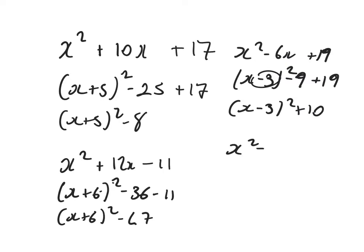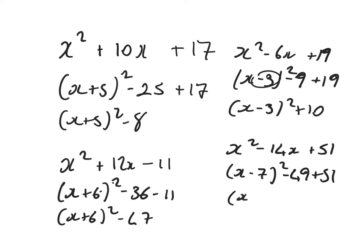Final simple example: x squared minus 14x plus 51. Half the minus 14 down to minus 7. Minus 7 squared is 49, get rid of that and I still need to add on 51. Final answer would be x minus 7 all squared plus 2.